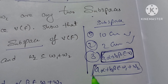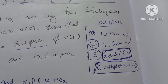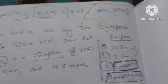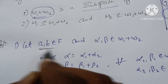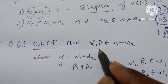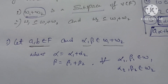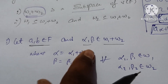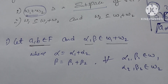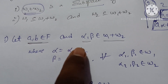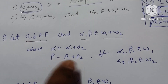We can see the value in this condition. Let's talk about the elements and vectors in W1 plus W2. Alpha is alpha1 plus alpha2, and beta is beta1 plus beta2.